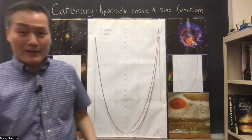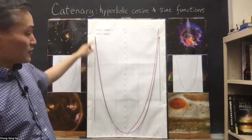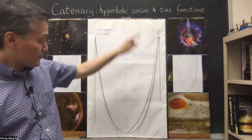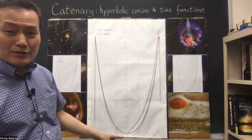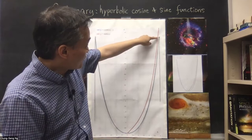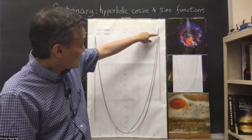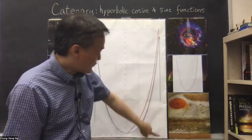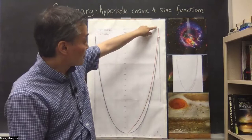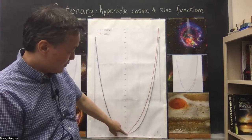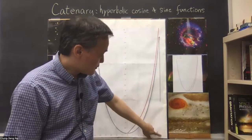One more thing: not only is the shape of the catenary given by the cosh function, but the arc length of the catenary is actually given by the sinh function. You can test that too. The total length of the catenary from the origin to some point is given by the value of the sinh function at that x-value. The red curve is the sinh function and the blue curve is the cosh function.